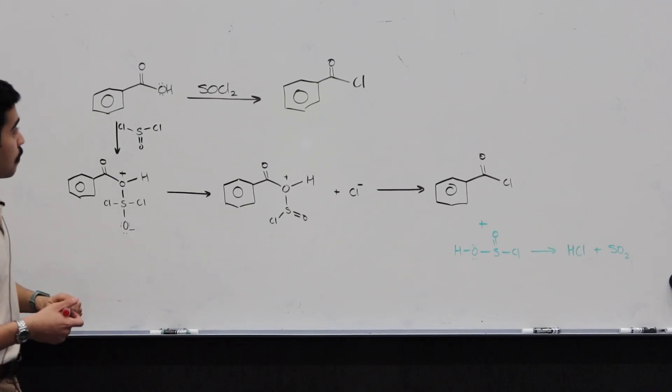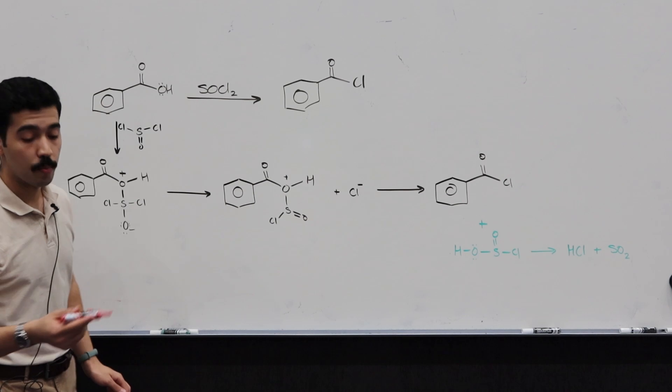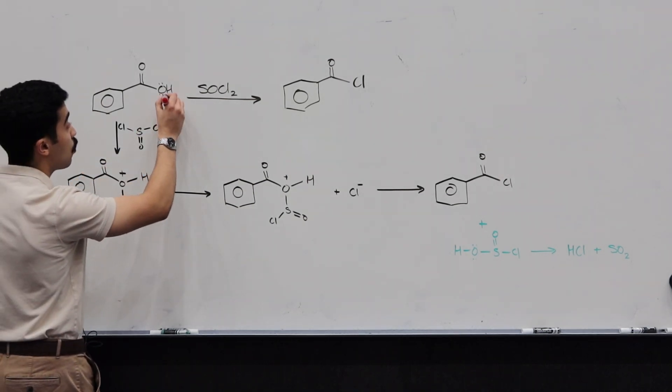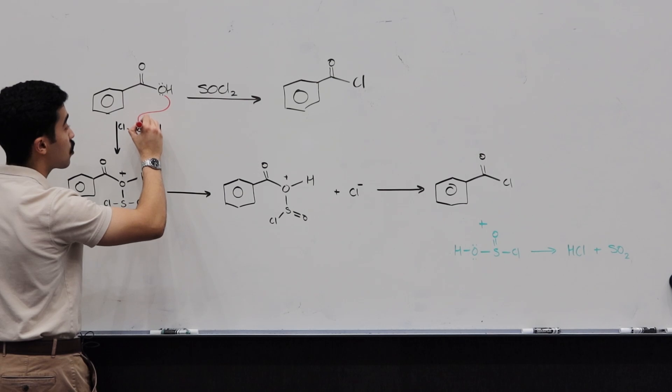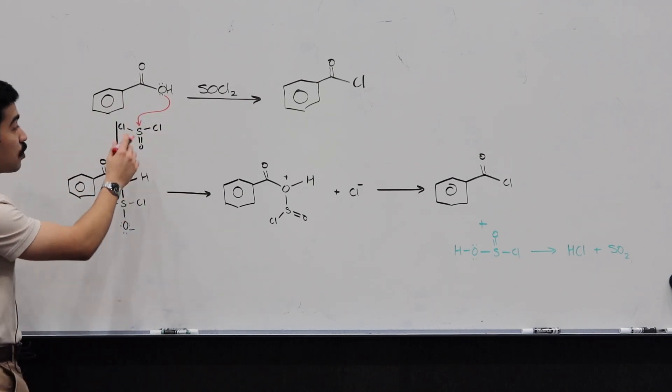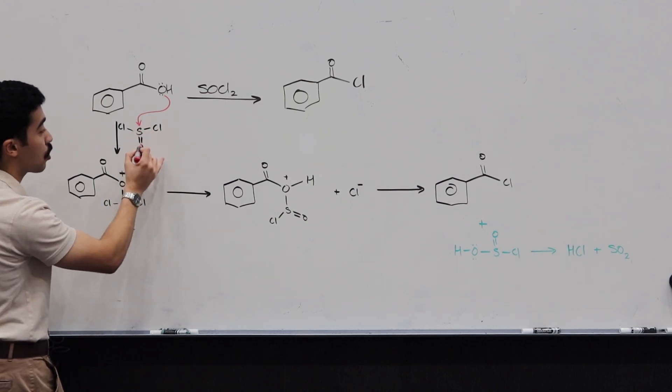So this mechanism begins by our carboxylic acid. Remember the OH on the carboxylic acid is going to have a lone pair of electrons. These lone pairs of electrons are going to attack or go towards this sulfur on the thionyl chloride, our reagent. Once they do that, you're going to form this product over here. But before that, once you attack the sulfur, you're going to break the S double bond O.